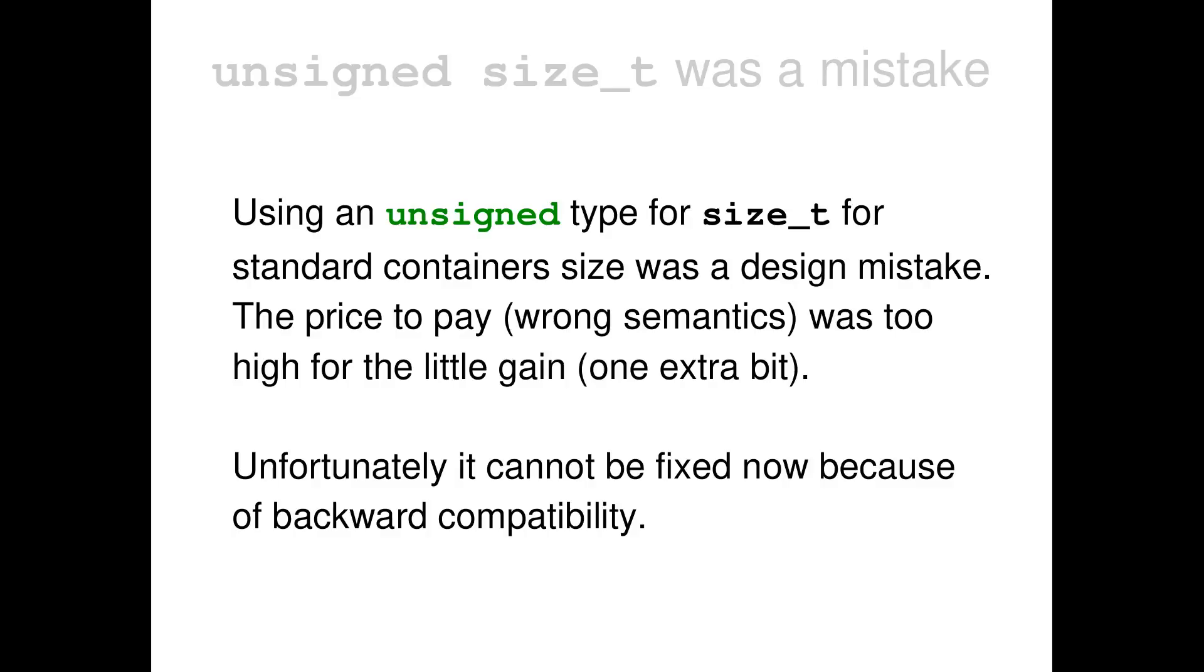But unfortunately, there is no way this can be fixed now. So even if now it's recognized by everyone that unsigned was the wrong choice for the size of containers, it cannot be fixed because of backward compatibility. There is just too much C++ code around the world that would behave differently if we change this. And this will just break everything. So this is not going to happen in any revision, future revision of C++. So the size_t is going to stay unsigned forever, unfortunately.